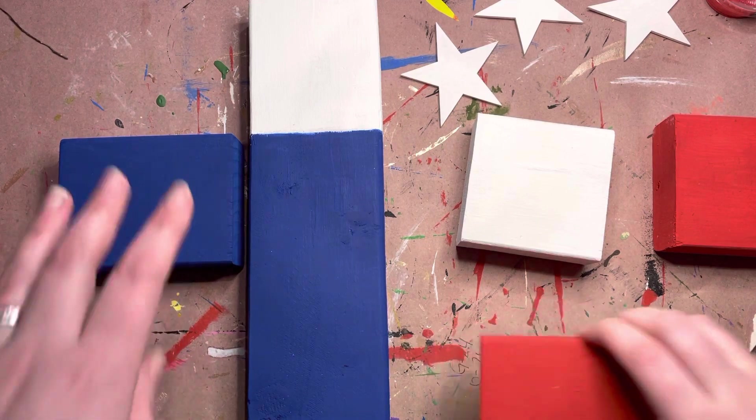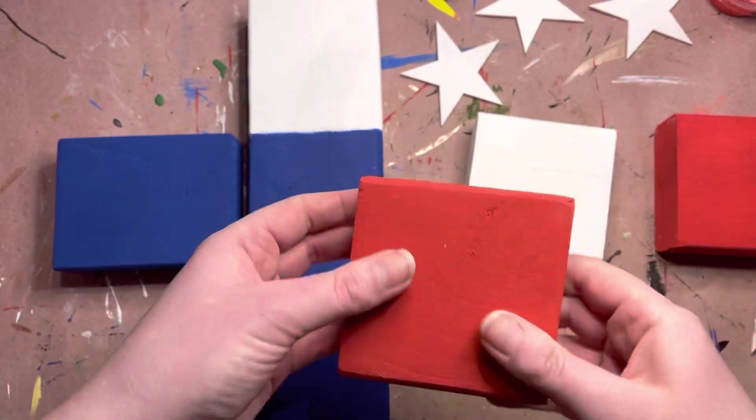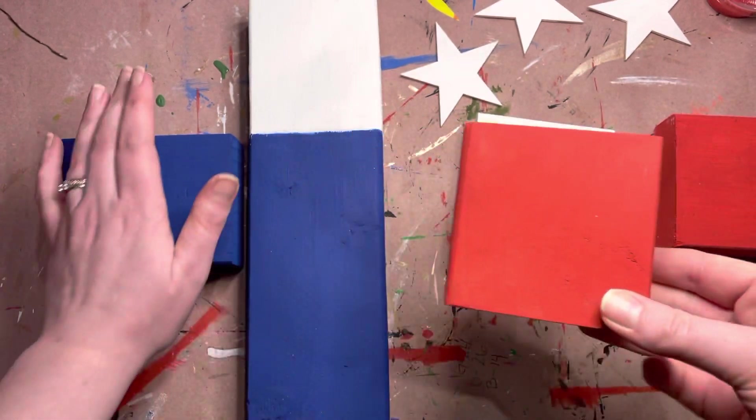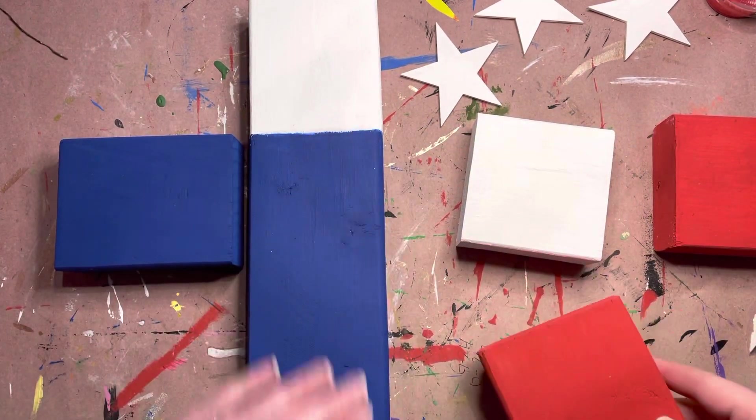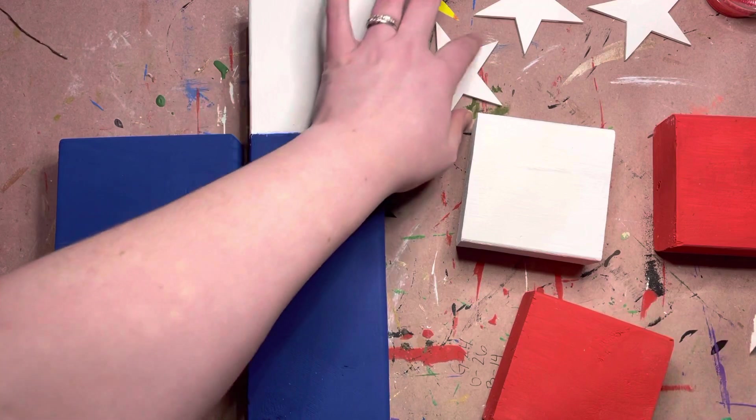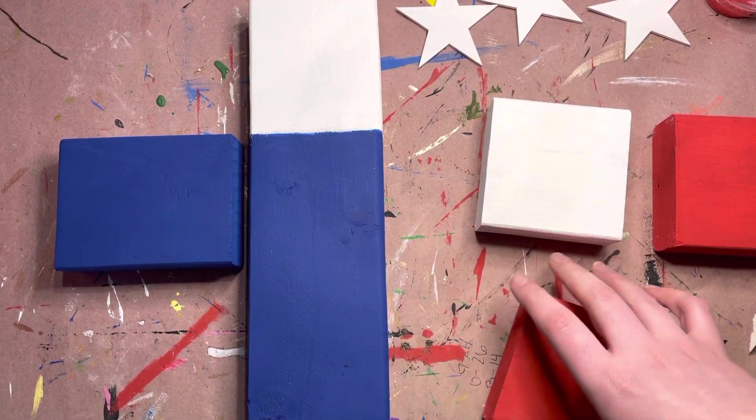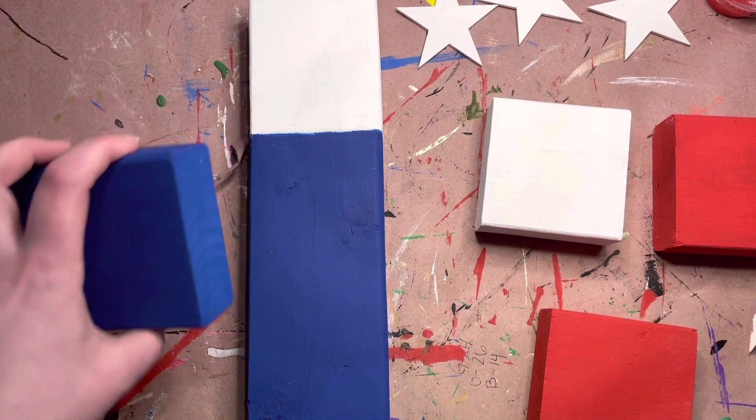So what you're going to want to do is you're going to go through and paint all of your pieces front and back. There's enough paint in your kit for you to do a couple coats. So do it to your liking, once you get to the point that you are content and you like the way that it looks. Once that is done, everything is dry, then you're going to go ahead and glue your pieces together.